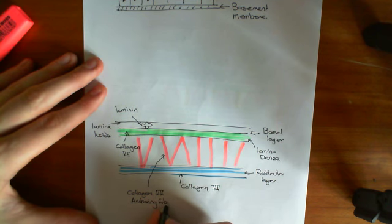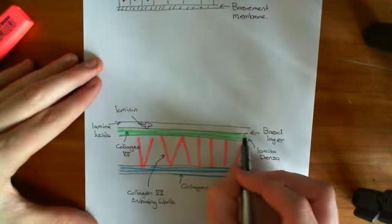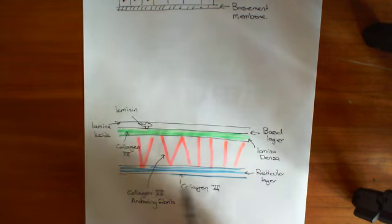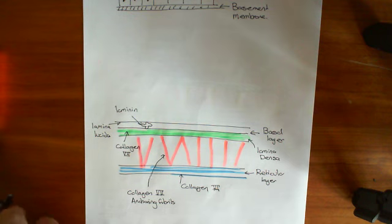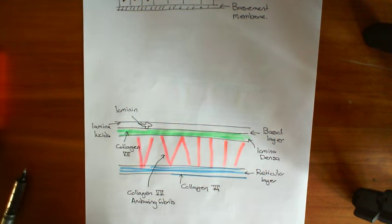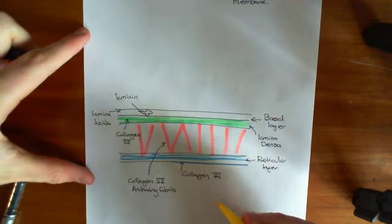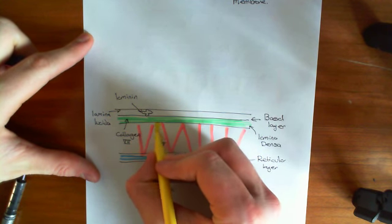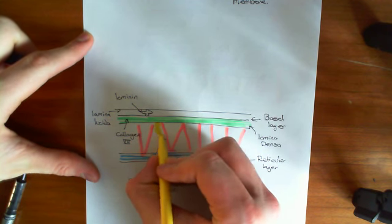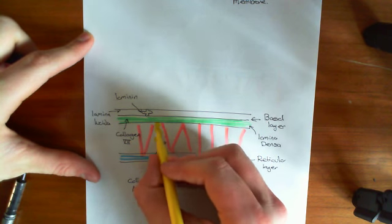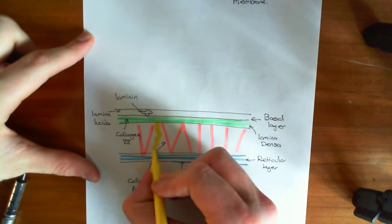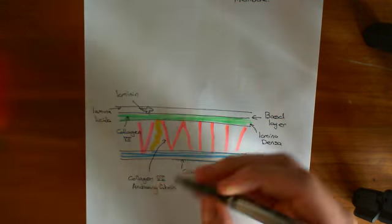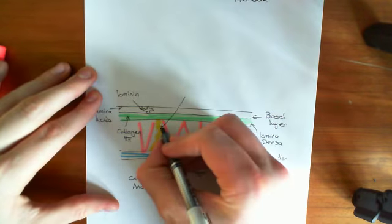And they join the basal layer up here, specifically the lamina densa, down to the reticular layer below. And then it's not just these collagen type 7 anchoring fibrils. We also have fibrillin microfibrils, which are basically loads of fibrillin molecules all joined together to make a kind of fibre — a microfibril, as it's called.